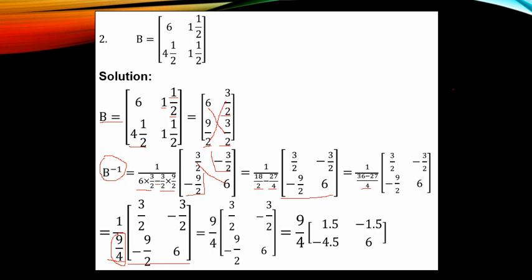Dividing 1 by 9 over 4 gives 4 over 9. Multiplied by the matrix, we also have 4 over 9. I choose to convert the entries to decimal form. Divide 3 by 2: you have 1.5 and minus 1.5. Divide 9 by 2: you have minus 4.5. And you have 6. This is the inverse of Matrix B.